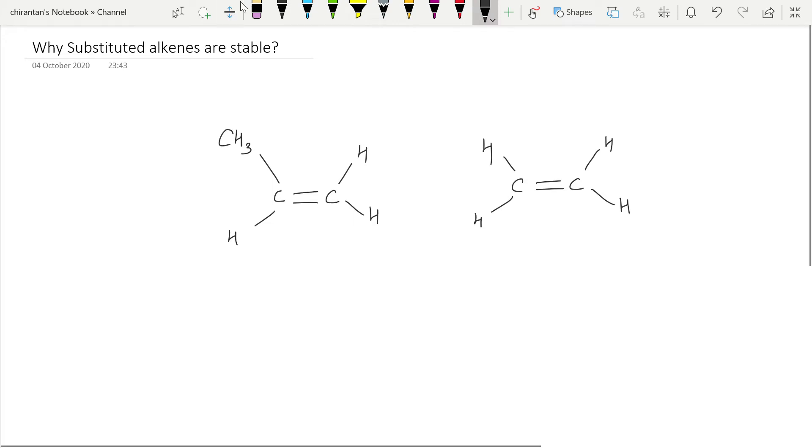The question is why substituted alkenes are more stable. By substituted, I mean the number of alkyl substituents present in an alkene. Here I have taken two examples.